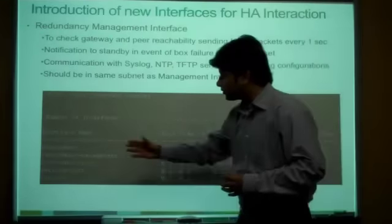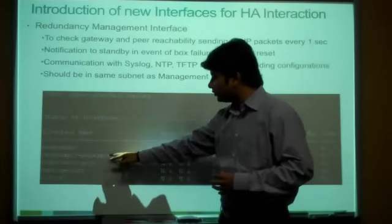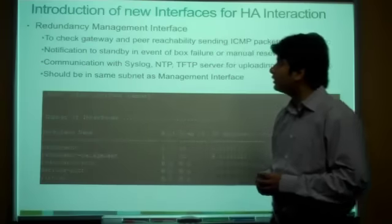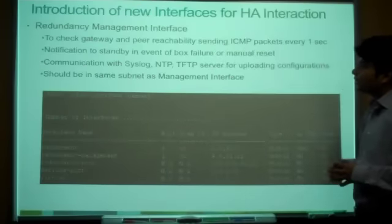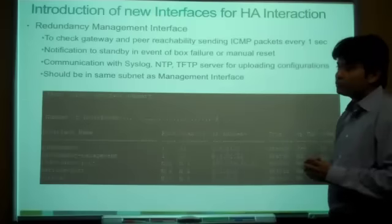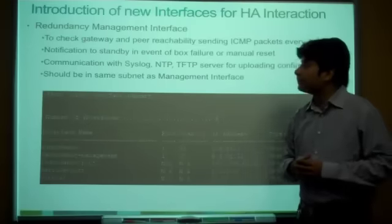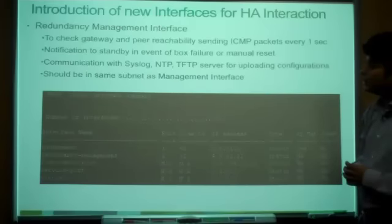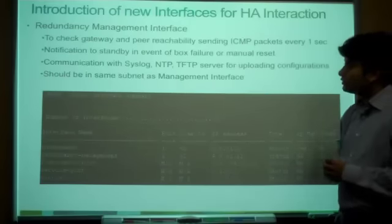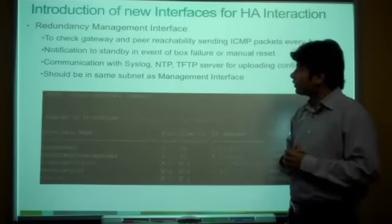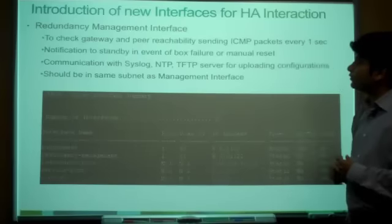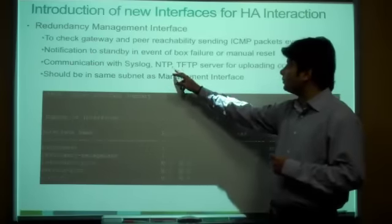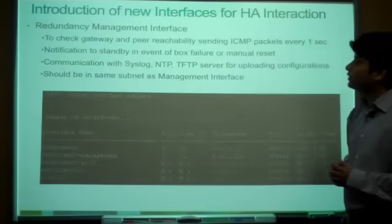From 7.2 to 7.3, we get a new interface called the redundancy management interface. This interface is used to check gateway reachability and also to check peer reachability. It is also used for notification to the standby in the event of failover. Communication with Syslog, NTP, and TFTP servers also uses this interface.